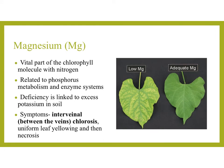Next up is magnesium, with the chemical symbol Mg. Magnesium is a vital part of the chlorophyll molecule, alongside nitrogen. It's related to phosphorus metabolism and enzyme systems. The deficiency is linked to excess potassium in the soil, which is one reason why too much potassium can have a negative effect on the plant. Symptoms include interveinal chlorosis — that is, uniform leaf yellowing between the veins — and then necrosis where the tissue eventually dies. In the picture you can see what adequate magnesium looks like versus low magnesium; notice the yellow coloration.